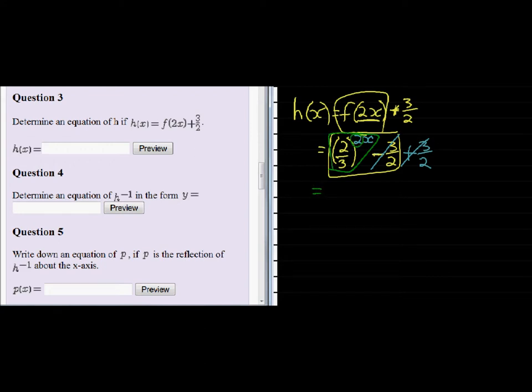we can write it as 2 over 3 squared, all of that to the power of x. Just to write it a little bit simpler, in other words to have 4 over 9.